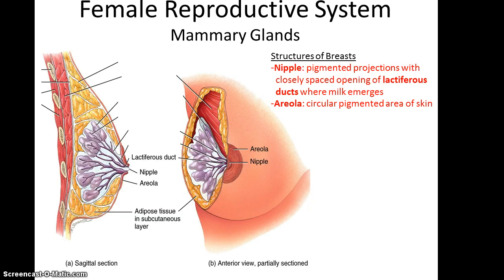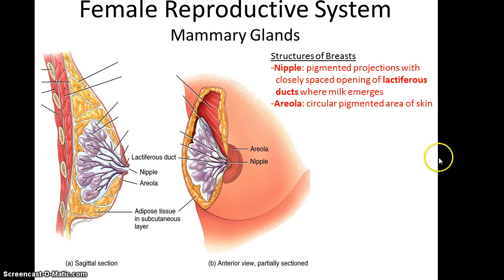Before we go into the ovarian-uterine cycle, let's remember the mammary glands. When you look at the breast, it has a few structures. Externally, you can see the nipple, which is the pigmented projection, and within it has closely spaced openings of the lactiferous ducts — this is where milk emerges. Around that is the areola, which is a circular pigmented area of the skin.